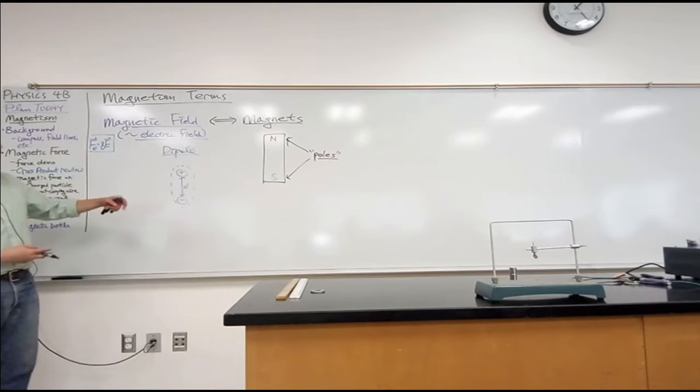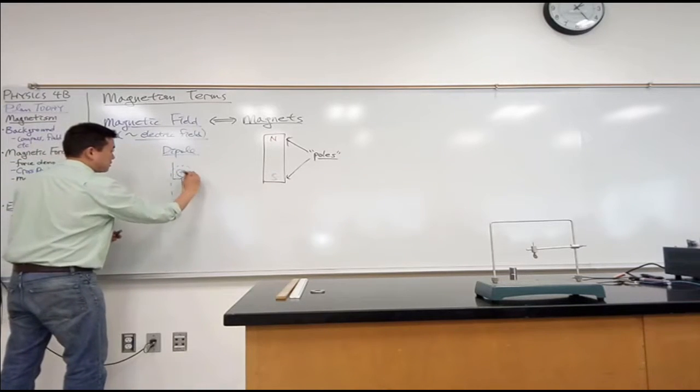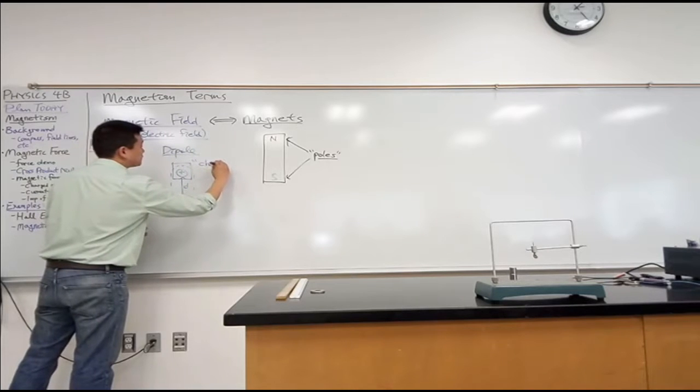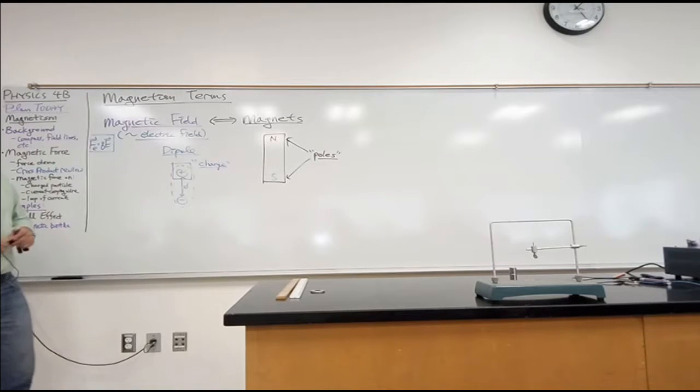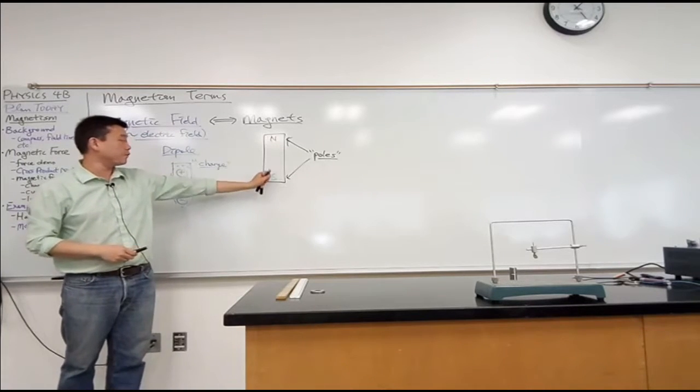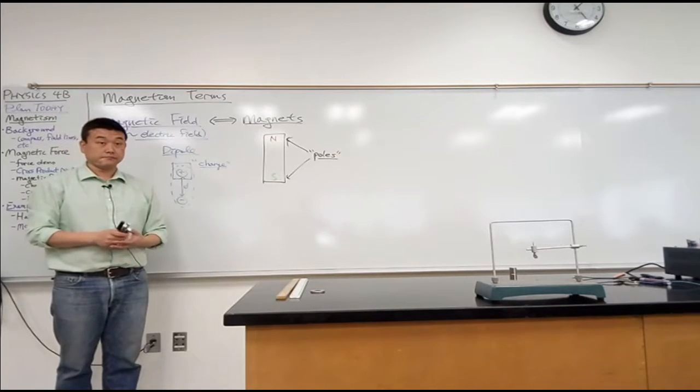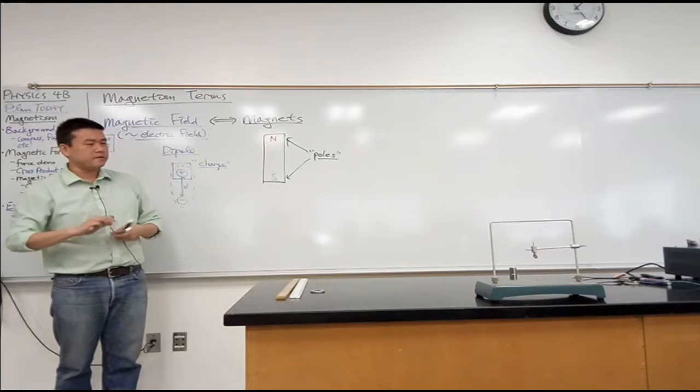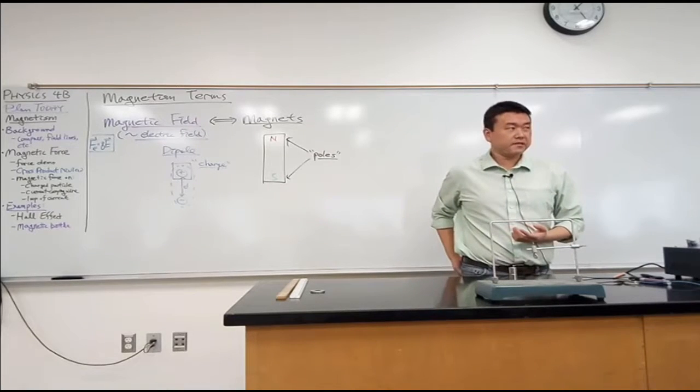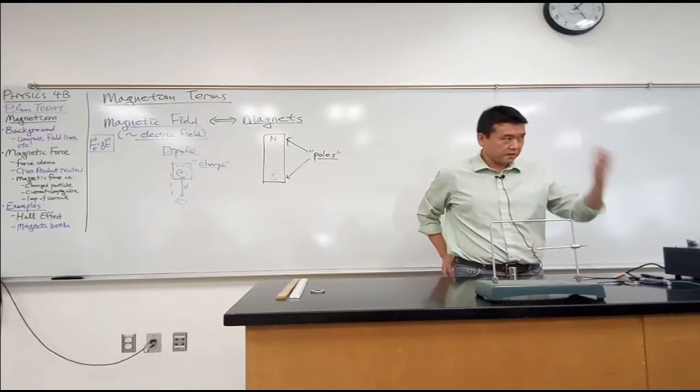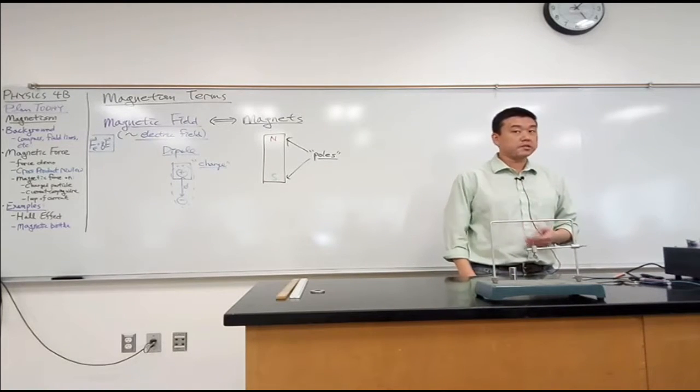But except when you are referring to this particular combination, we would call this object electric charge. So the question is, why do we use a different word for this? Why do we not simply say it's north charge and south charge? In other words, how is magnetism different from electricity in one key way? This is something I hope you already know. I'm just trying to highlight it. But magnetism is different from electricity in one key way.